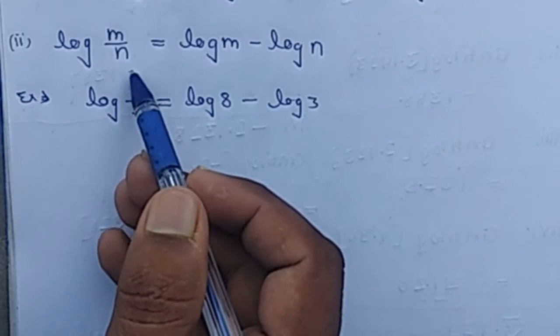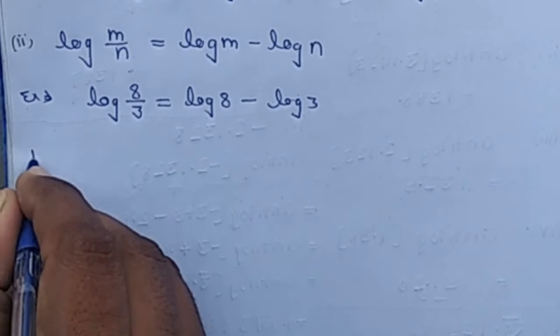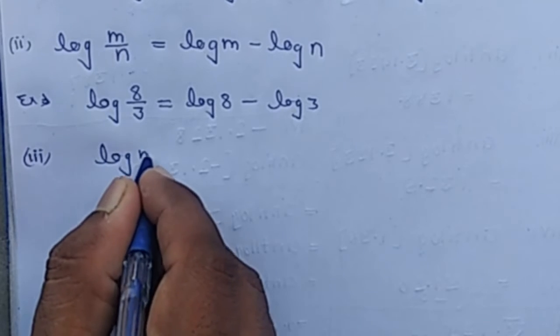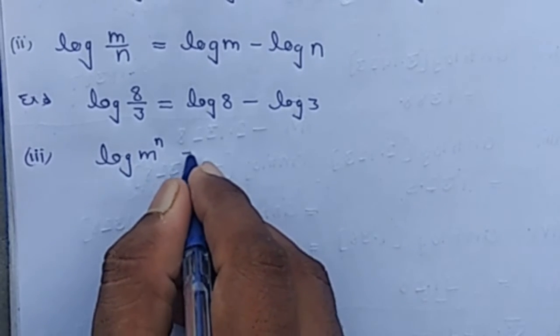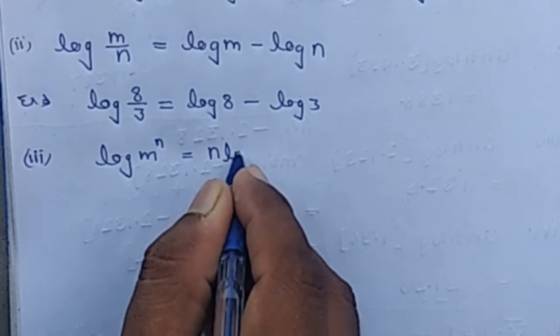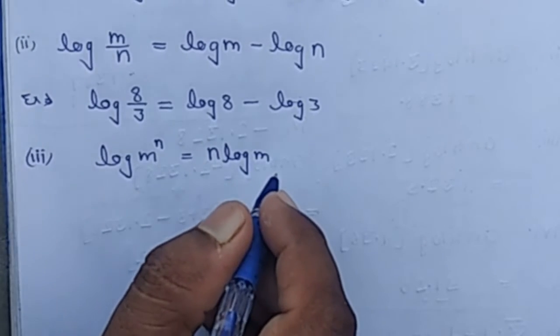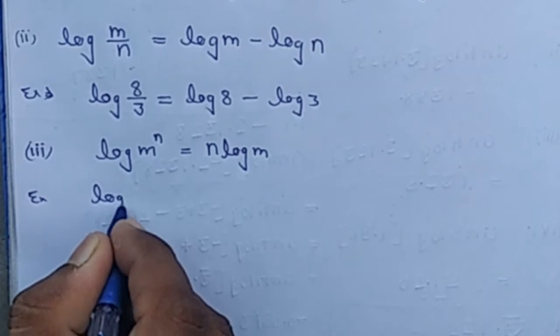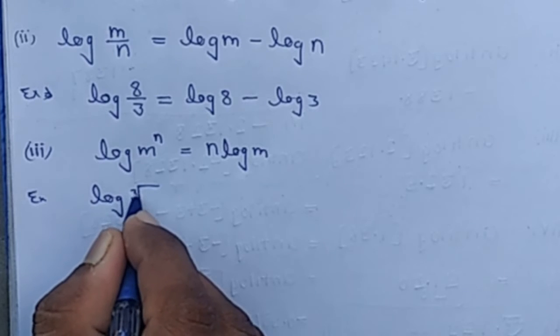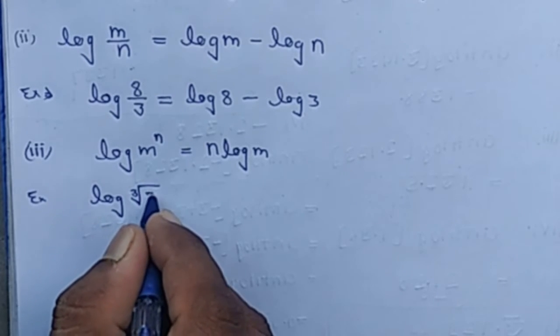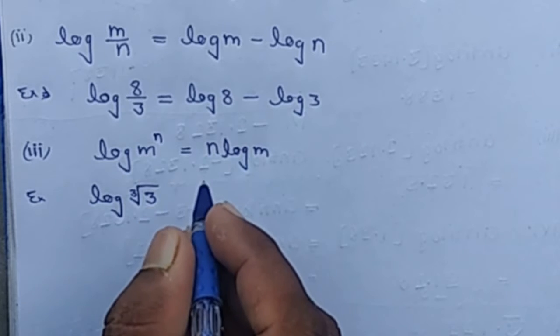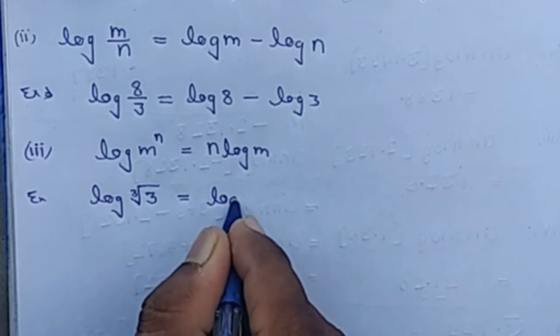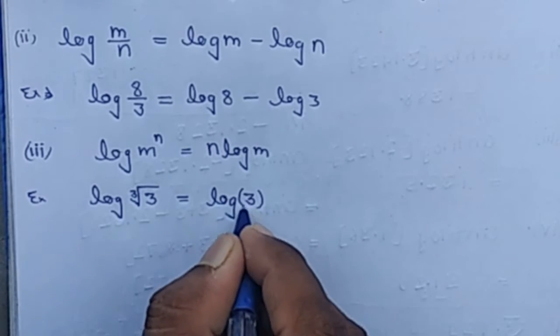The third formula is log(m^n) = n log m. For example, log(cube root 3) can be written as log(3^(1/3)).